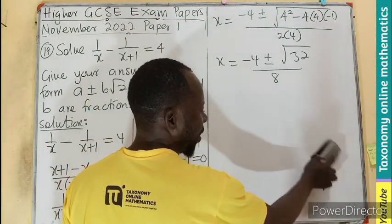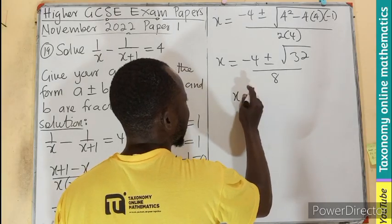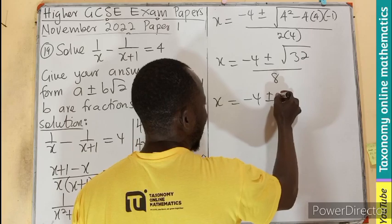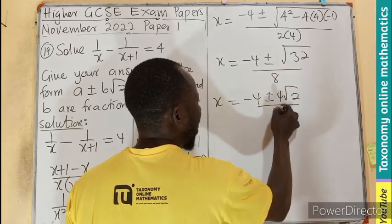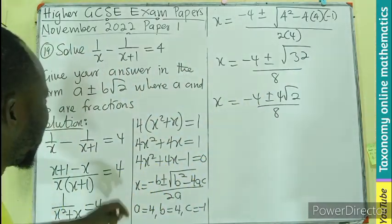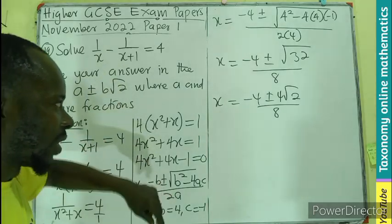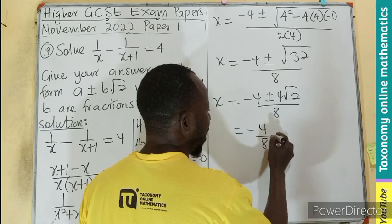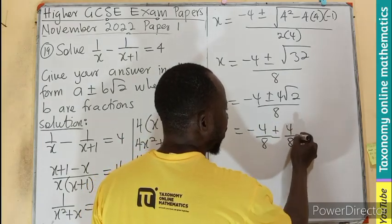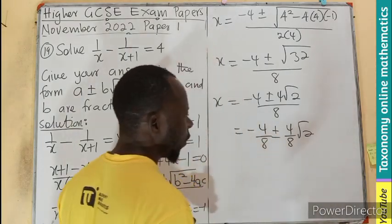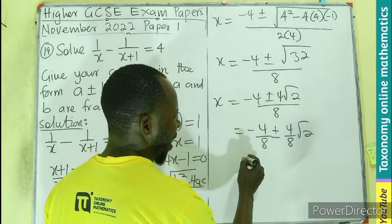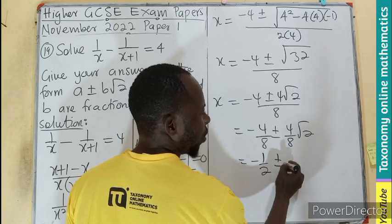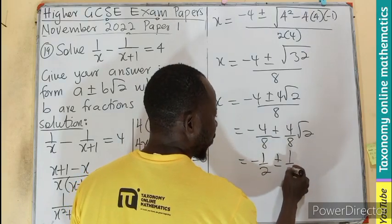So I'll be having x equals to minus 4 plus or minus 4 root 2 divided by 8. But we need a separately, b separately. So we divide by the 8. Minus 4 on 8 plus or minus 4 on 8 root 2. We have a common factor of 4. So 1 over 2, 1 over 2.